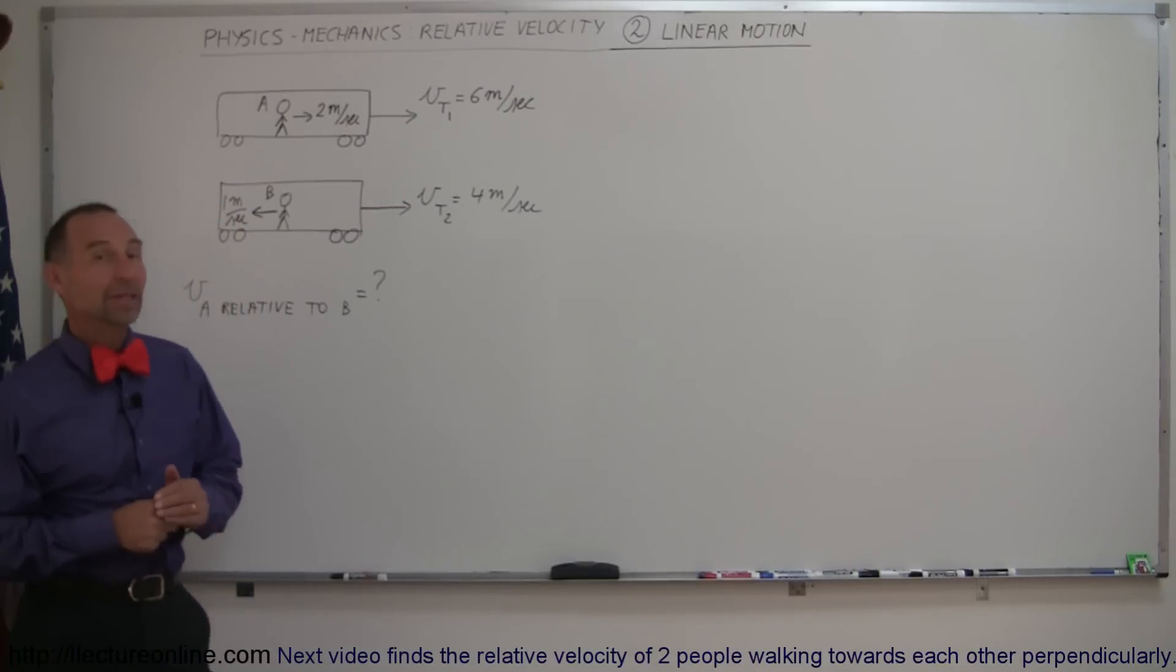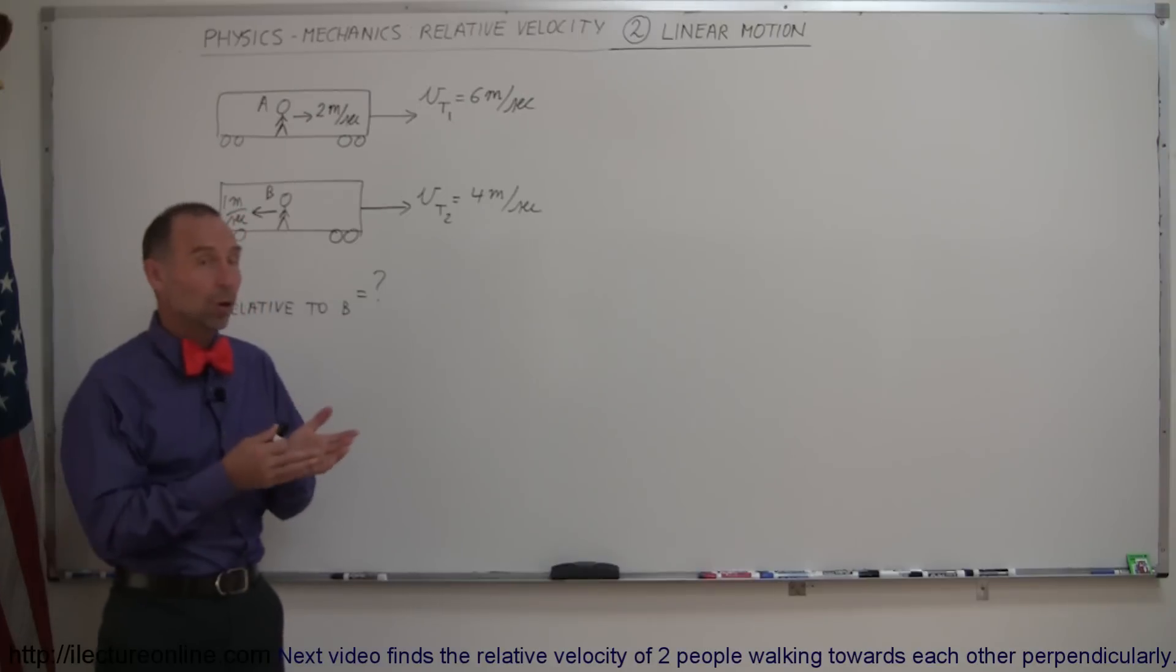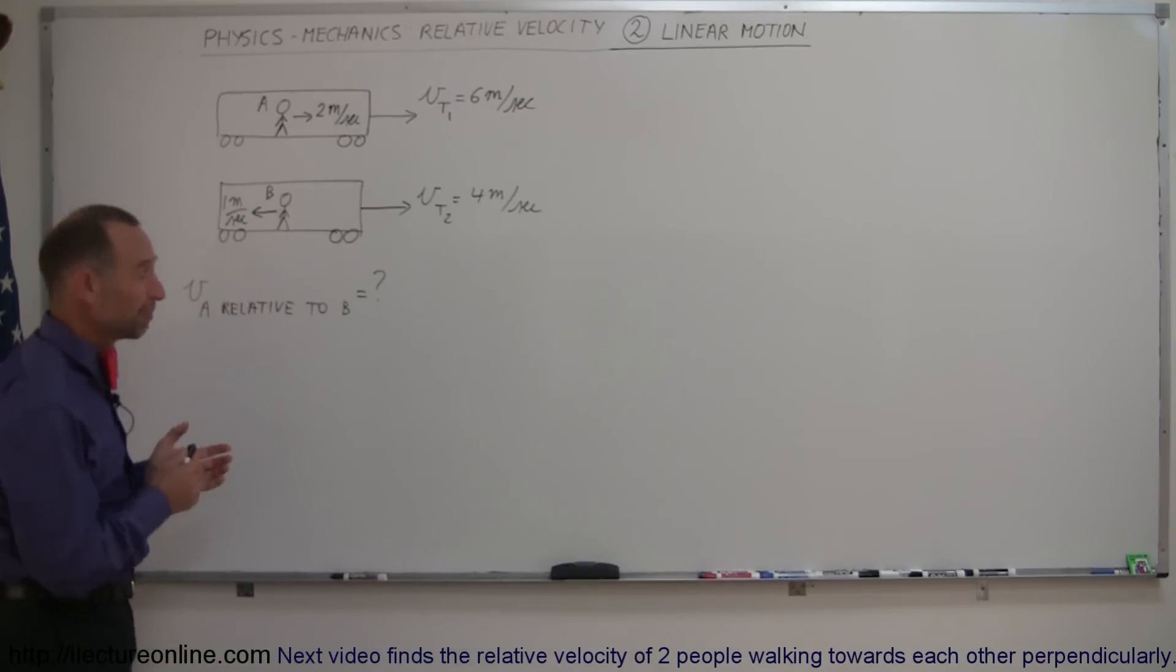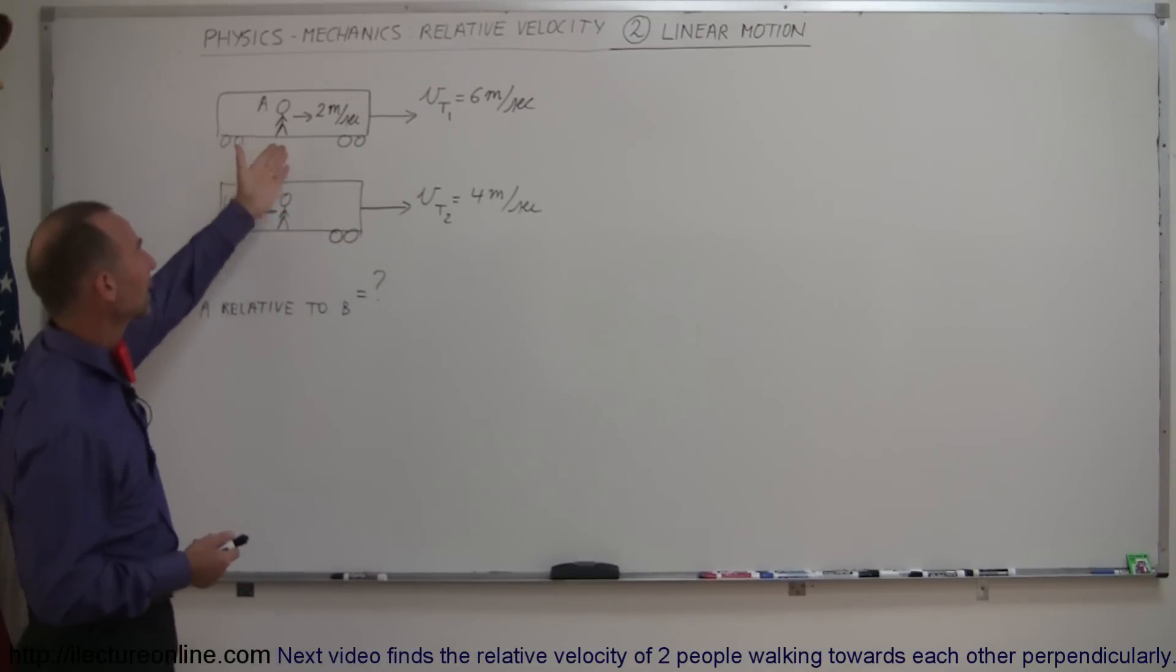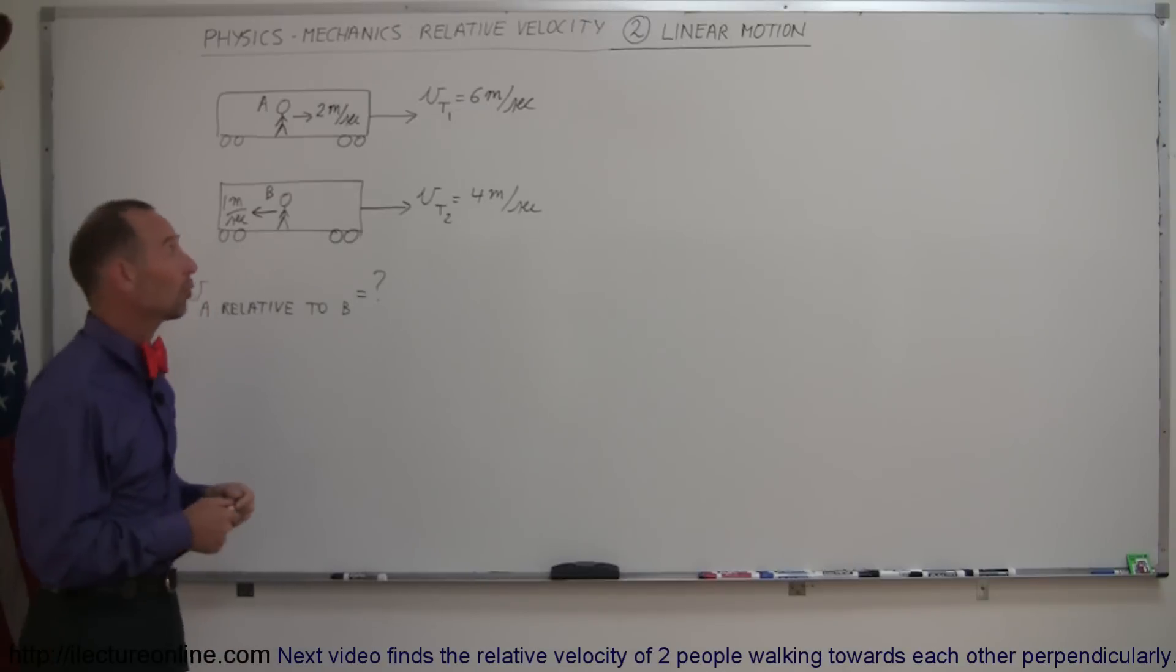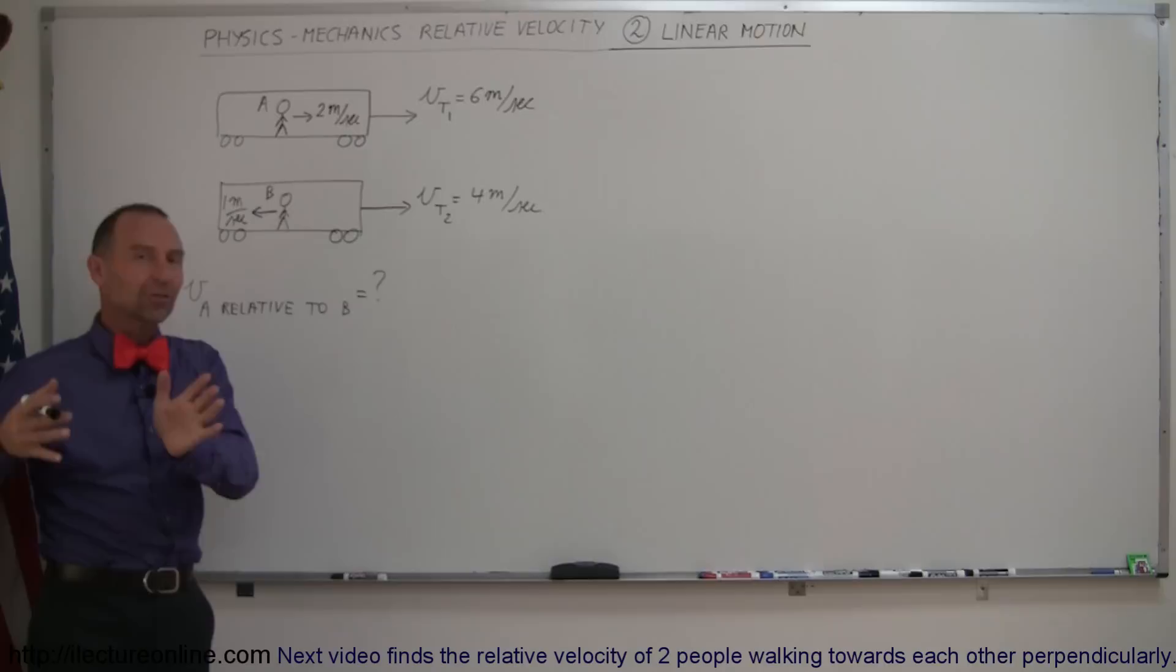Here's another example of how to deal with relative velocities in linear motion. Some of us may have experienced this. If you're on a train at a station, the train may be moving in one direction, you may be walking within that train in the same direction, and in the tracks next to you there's another train moving in the same direction.